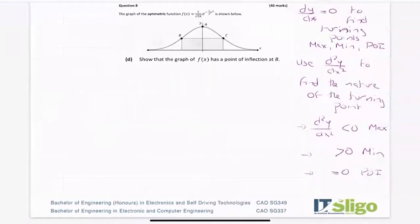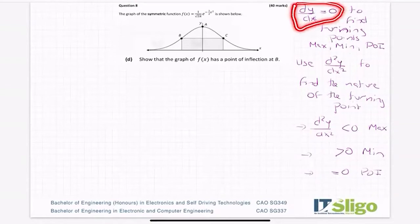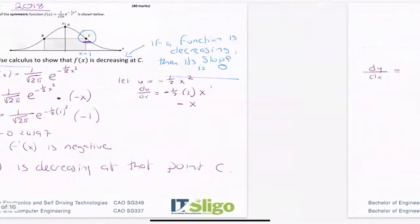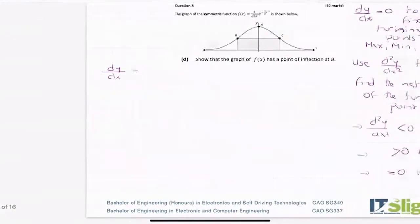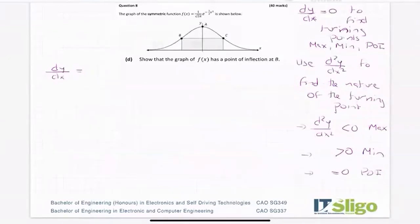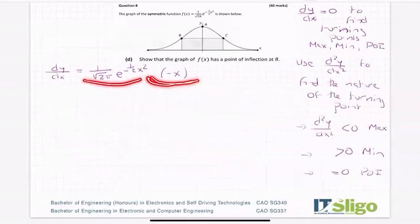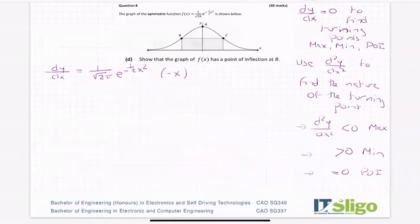Show that the graph of f(x) has a point of inflection at b. The first thing I need to do is let dy/dx = 0 to find those turning points. We have dy/dx — we found it in the last question. It was 1 over root 2π · e to the minus a half x squared, multiplied by minus x. I might leave it like that rather than tidying it, because I see I have a product rule anyway — there's a function in x and a function in x, I've already differentiated, so it's kind of set up for the product rule.